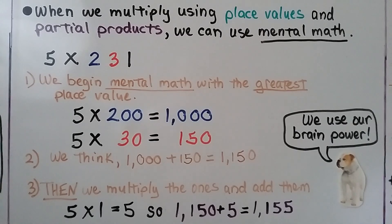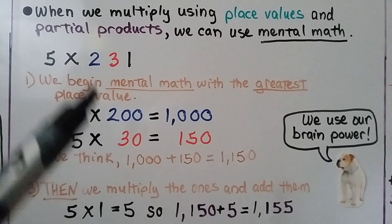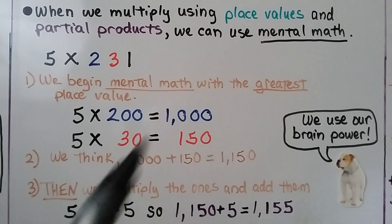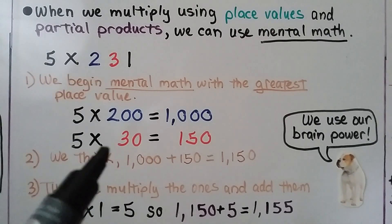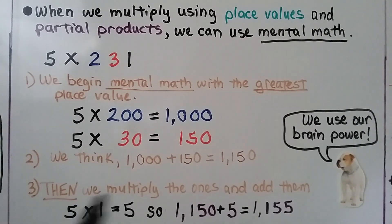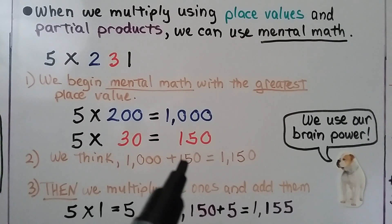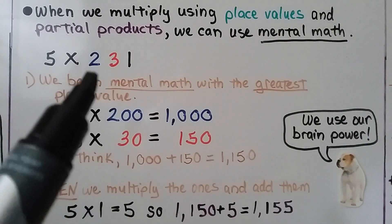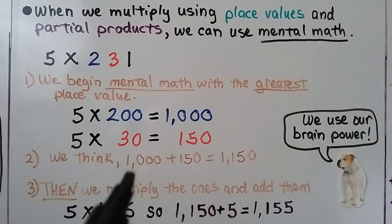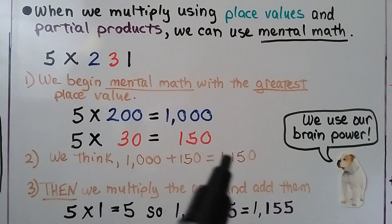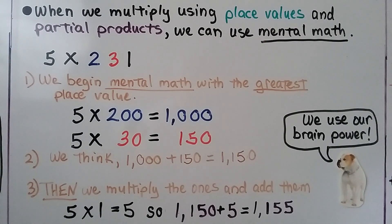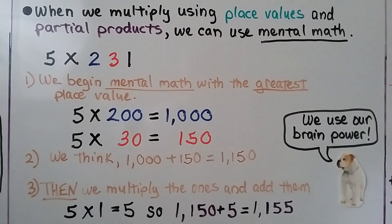When we multiply using place value and partial products, we can use mental math. We have 5 times 231. We begin with the greatest place value, the 200. 5 times 200 is equal to 1,000. Then 5 times 30 is 150, and 1,000 plus 150 is 1,150. Now we do 5 times 1, which is 5. So 1,150 plus 5 is equal to 1,155. We're using our brain power.